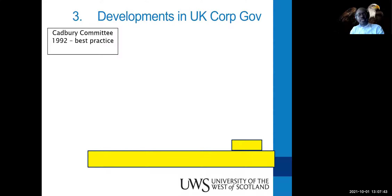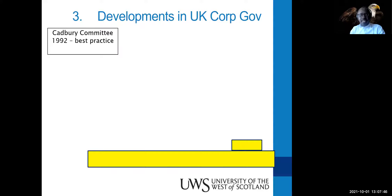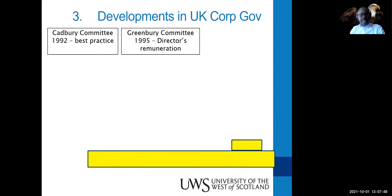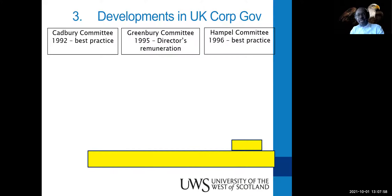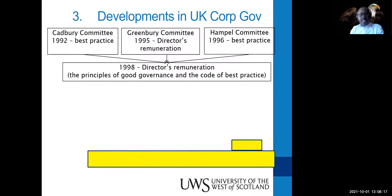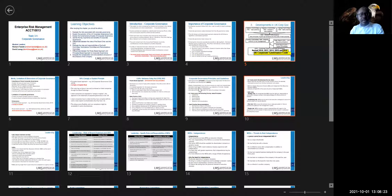The Cadbury Committee Report in 1992 issued best practice guidelines. The Greenbury Committee Report in 1995 made recommendations on directors' remuneration and what should be disclosed — that's why almost all listed companies today show a separate report on directors' remuneration. The Hampel Committee also cemented the Cadbury Report of 1992 with best practice, leading to what we call the principles of good governance and the code of best practice.